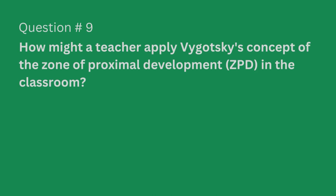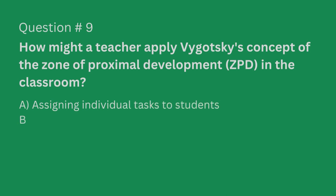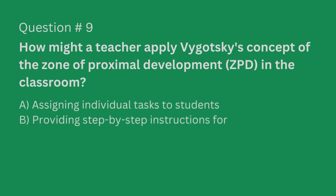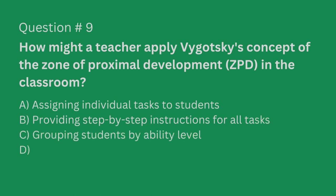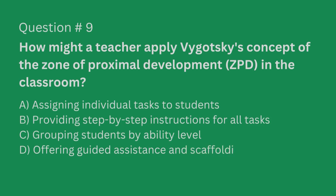Question number nine. How might a teacher apply Vygotsky's concept of the zone of proximal development, or ZPD, in the classroom? A. Assigning individual tasks to students. B. Providing step-by-step instructions for all tasks. C. Grouping students by ability level. Or D. Offering guided assistance and scaffolding.